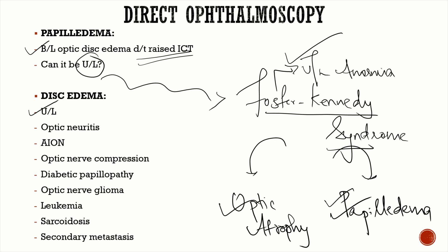Disc edema also presents with an edematous optic disc, but it is unilateral — unlike papilledema, which is bilateral. Important causes of disc edema include optic neuritis and anterior ischemic optic neuropathy. Other causes include optic nerve compression at the orbit, diabetic papillopathy, optic nerve glioma, leukemia, sarcoidosis, and secondary metastasis.